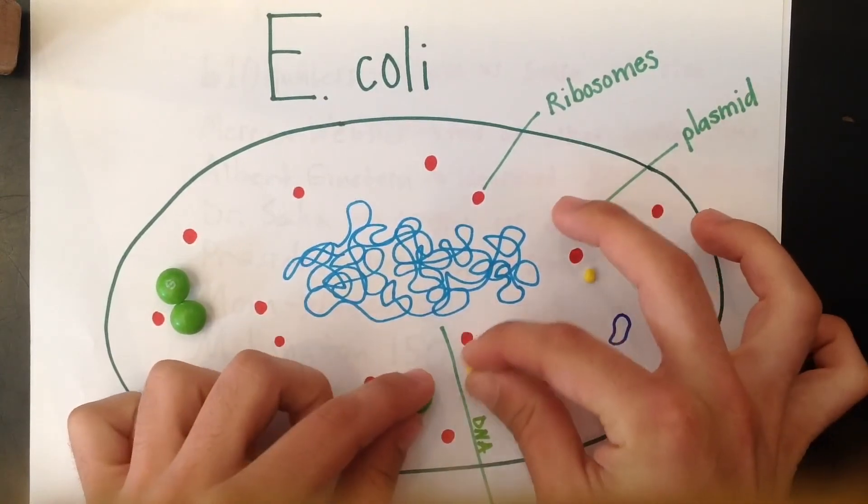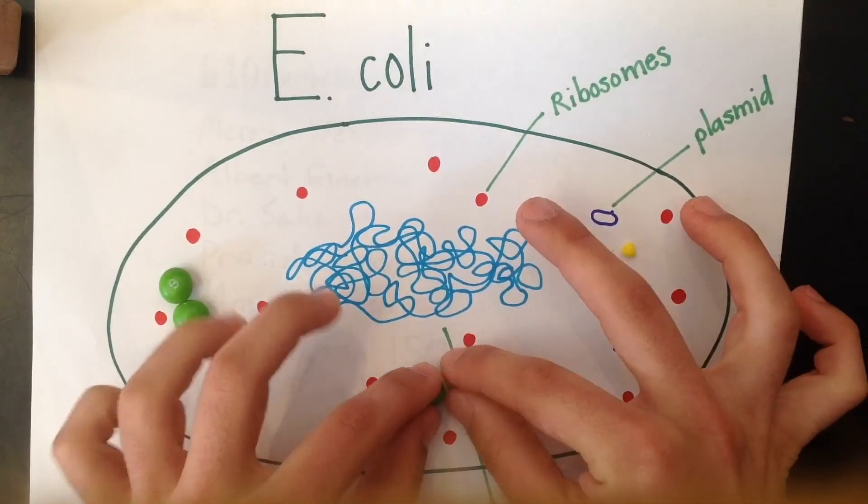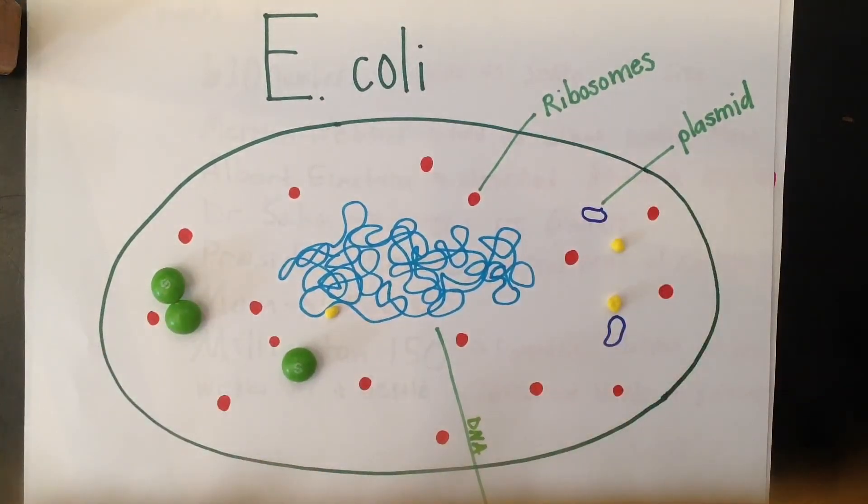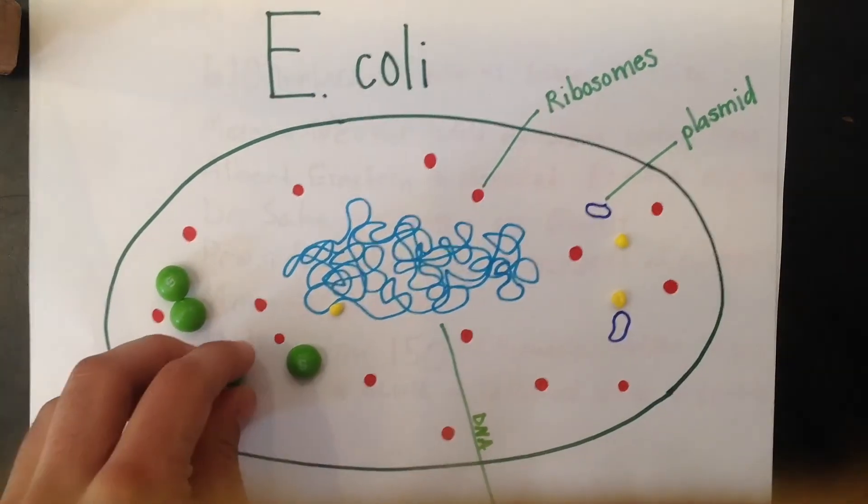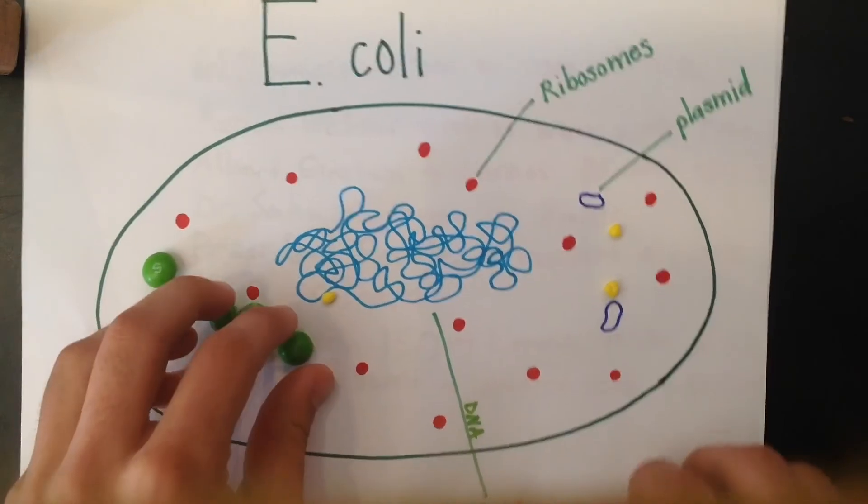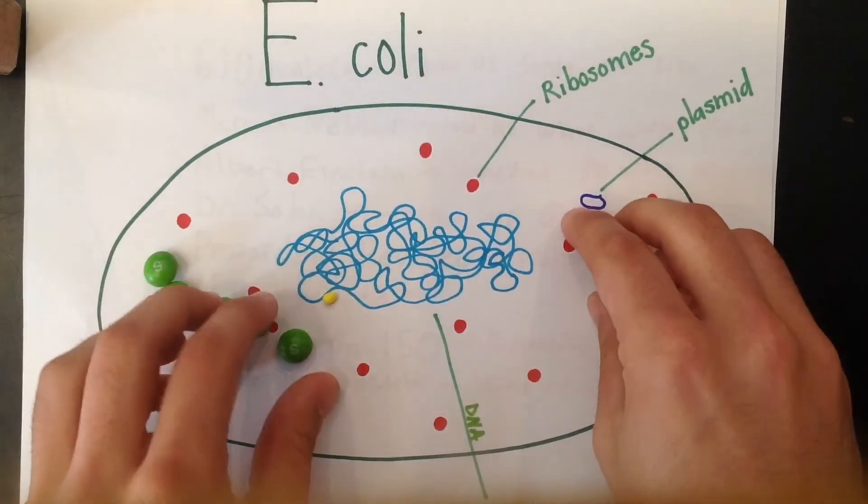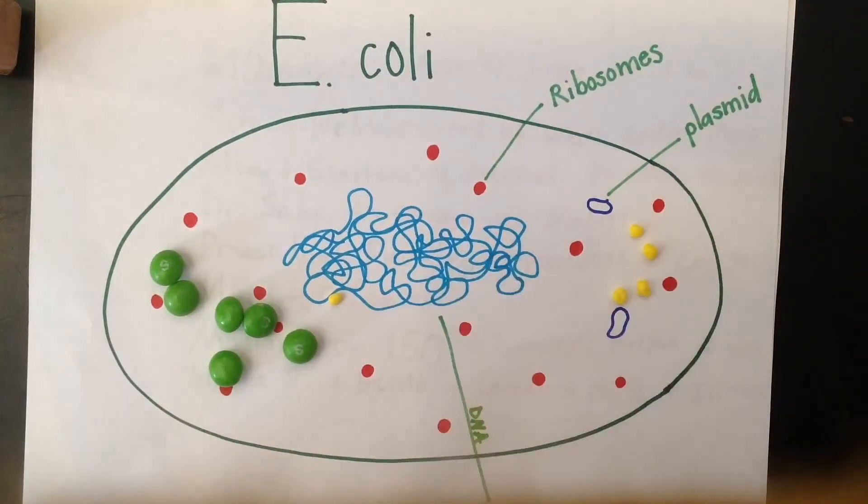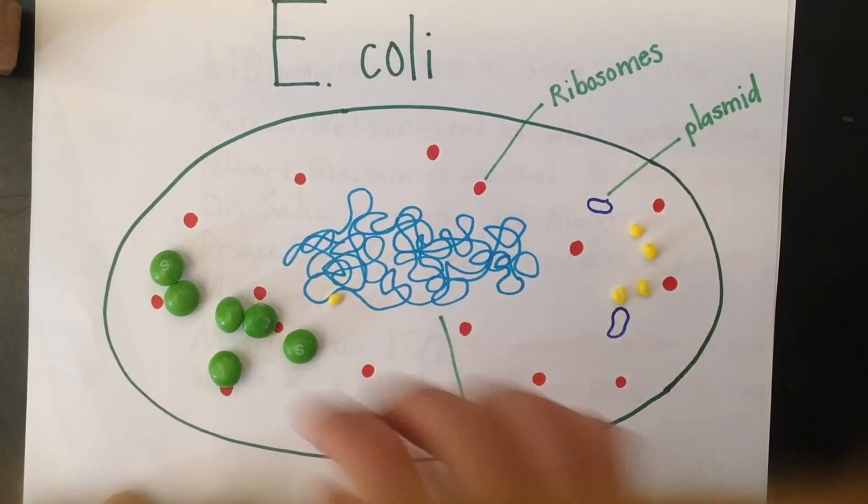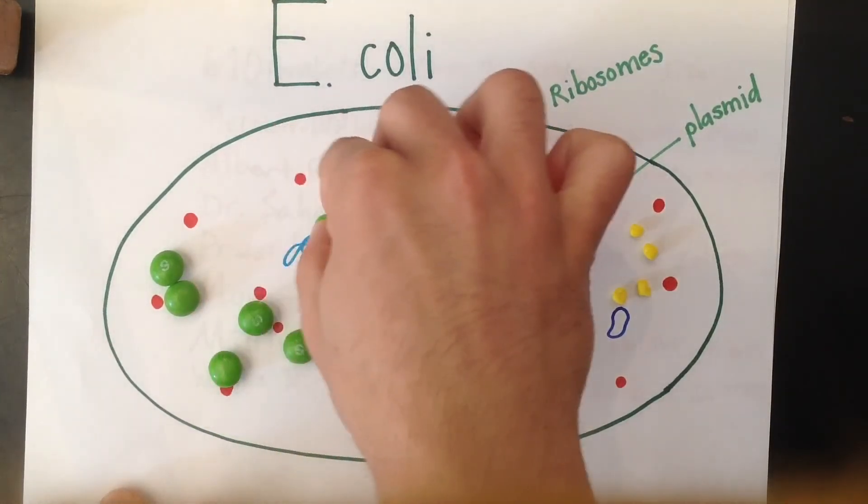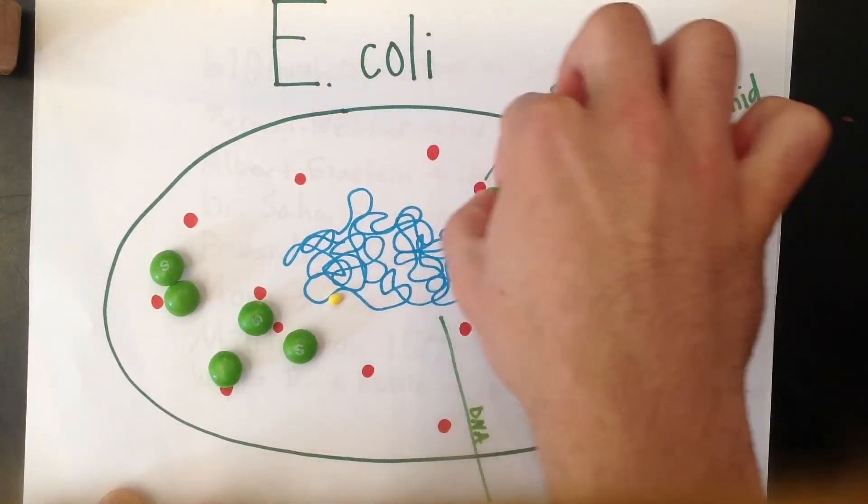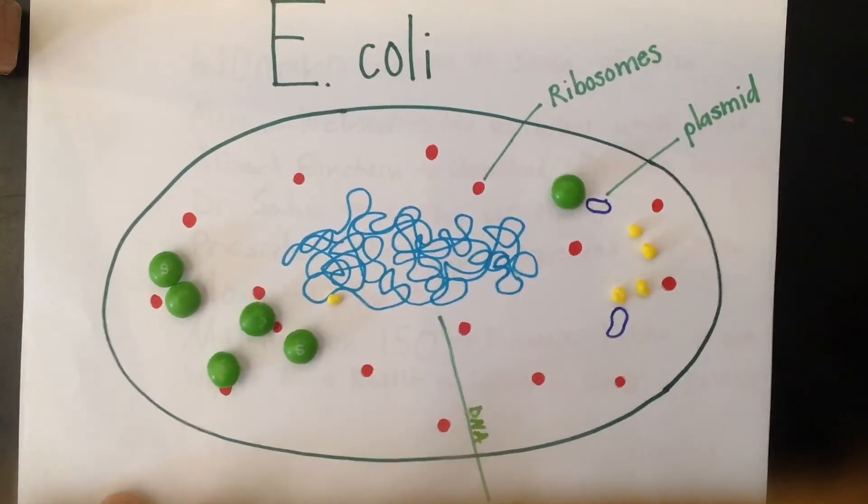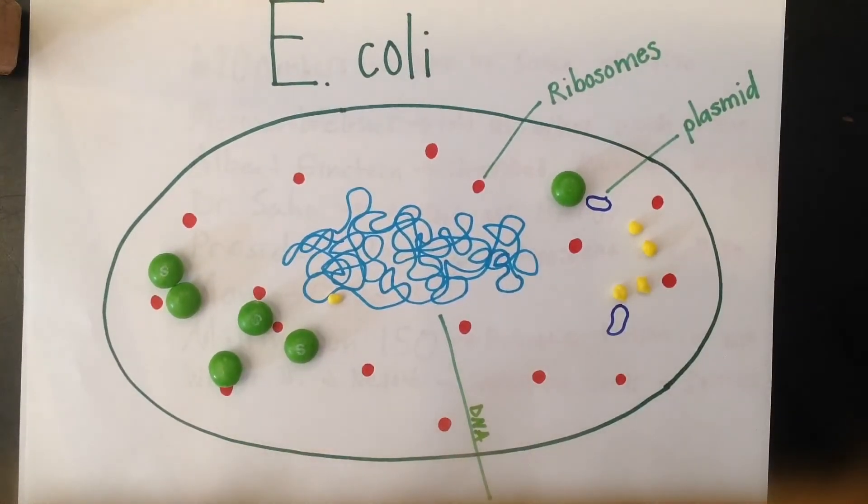However, when you have higher concentrations of these enzymes and substrates, they are much more easily available to interact with each other. And although there is still Brownian motion and they would randomly interact with the ribosomes, DNA, and plasmids, they would eventually find their way to each other and cause reactions at a much higher rate with higher concentrations.